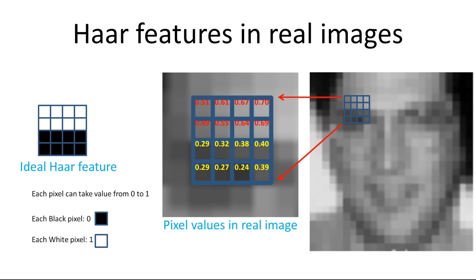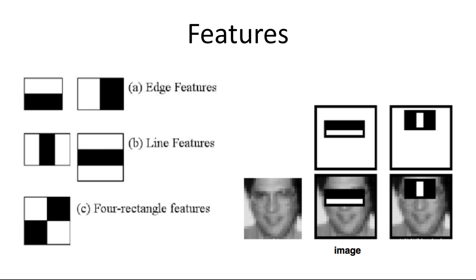HAR features are just like our convolutional kernel. Each feature is a single value obtained by subtracting the sum of pixels under the white rectangle from the sum of pixels under the black rectangle. The first feature selected seems to focus on the property that the region of the eyes is often darker than the region of the nose and cheeks. The second feature selected relies on the property that the eyes are darker than the bridge of the nose. But the same windows applied to cheeks or any other place is irrelevant.